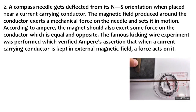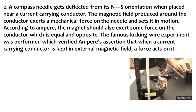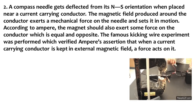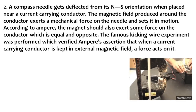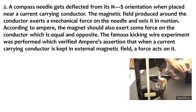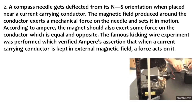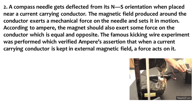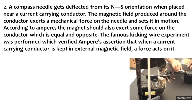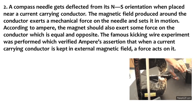In this case study, two conditions are explained. In the first case, there is deflection of a compass needle when it is kept near a current-carrying conductor. In the second part, when a current-carrying conductor is placed between the poles of a magnet or in a magnetic field, due to the force acting on the conductor, the conductor itself gets deflected. Now let's answer a few questions based on this case study.